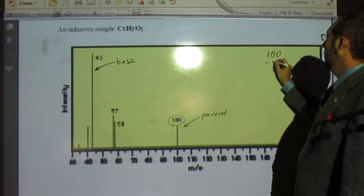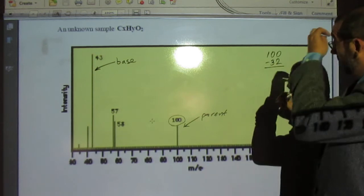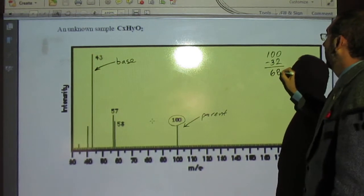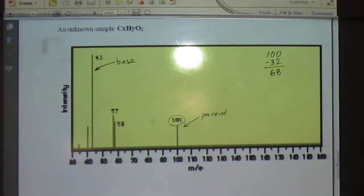16 times 2, 32. So we get 68. And now what are we going to do? Divide by 12. And what do you get when you divide by 12? 5.5.